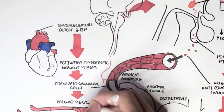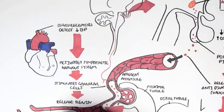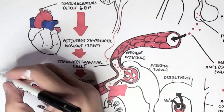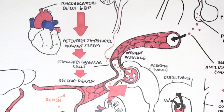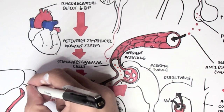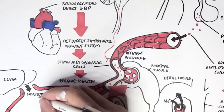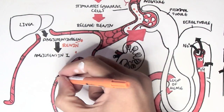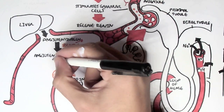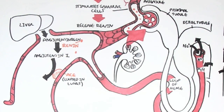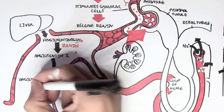Renin is a very important enzyme. The liver continuously produces a pre-hormone known as angiotensinogen. When angiotensinogen is catalyzed by renin, it converts to angiotensin I. Angiotensin I doesn't really do much; however, if angiotensin I is converted by ACE — angiotensin-converting enzyme, which is predominantly located in the lungs — it becomes angiotensin II.